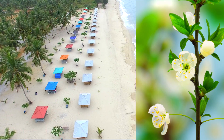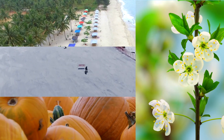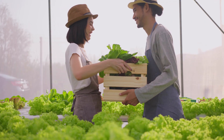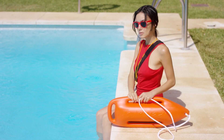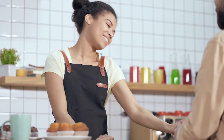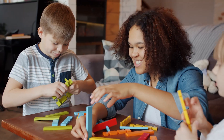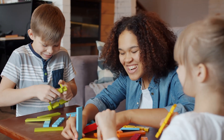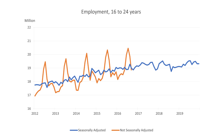Of course, sometimes seasonal effects are exactly what you want to know about. For example, every year BLS produces a report on summer youth employment, and the change in employment resulting from school being out is precisely what it's measuring. For that reason, BLS always provides both the seasonally adjusted data and data without this method used.